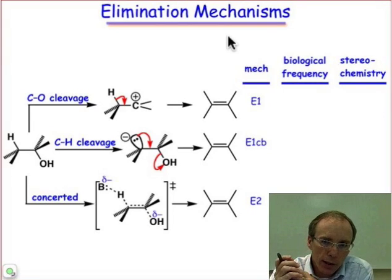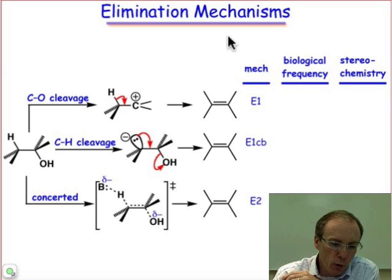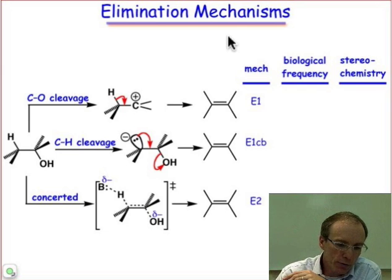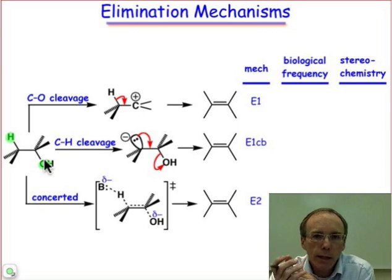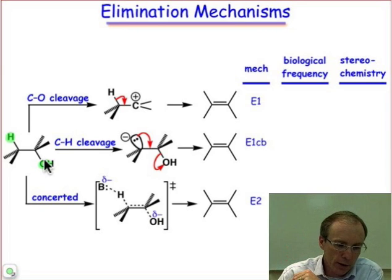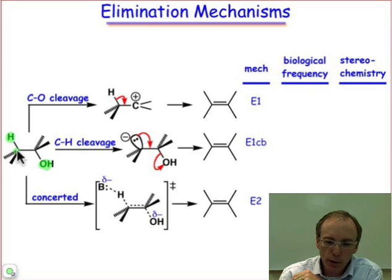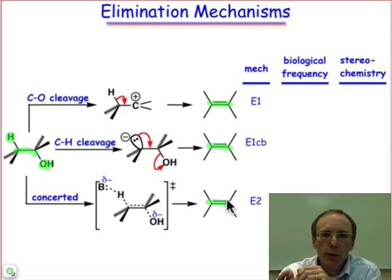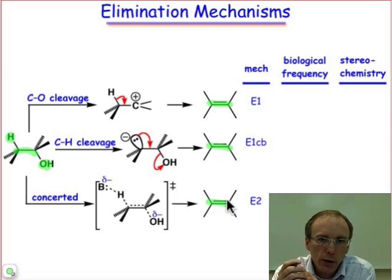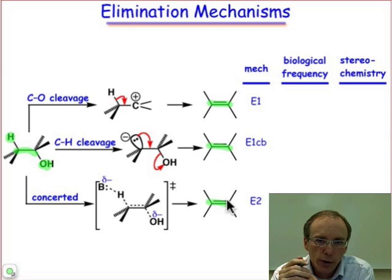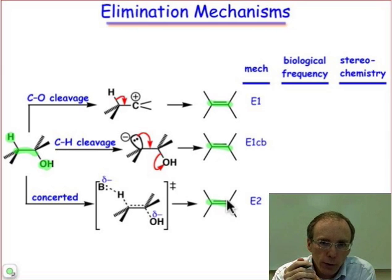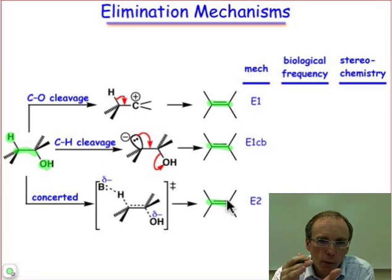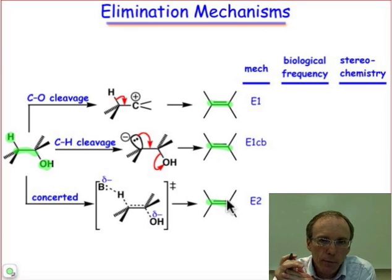There are three reaction pathways by which the elements of water, HOH, can be eliminated across a carbon-carbon single bond in order to produce carbon-carbon double bonds. These three reaction pathways are broken down according to which bond breaks first. We're going to take a look at these different reaction pathways and put them all together in one spot so that you can look at them and compare them.